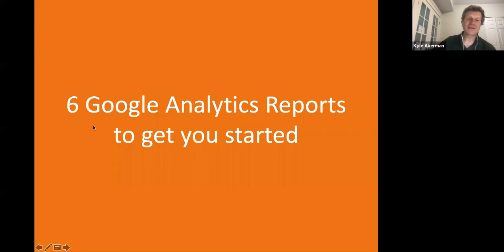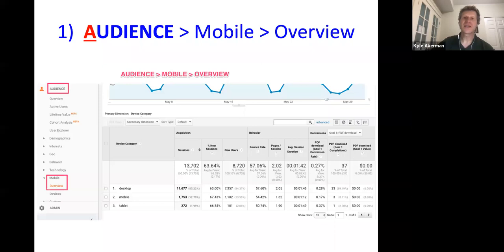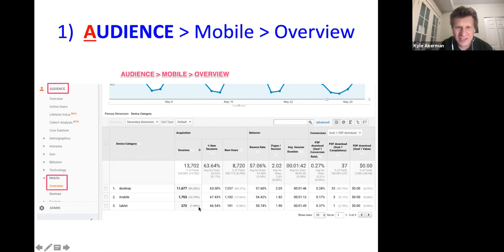I want to give you six reports that anyone can use — basically one or two from each of the ABC categories. The first one is the Audience Mobile Overview report, which gives you data on desktop versus mobile versus tablet. Tablet is typically only about 2% of traffic, so you don't really need to worry about that much — many times it mirrors desktop behavior anyway. This is a report everyone can use.